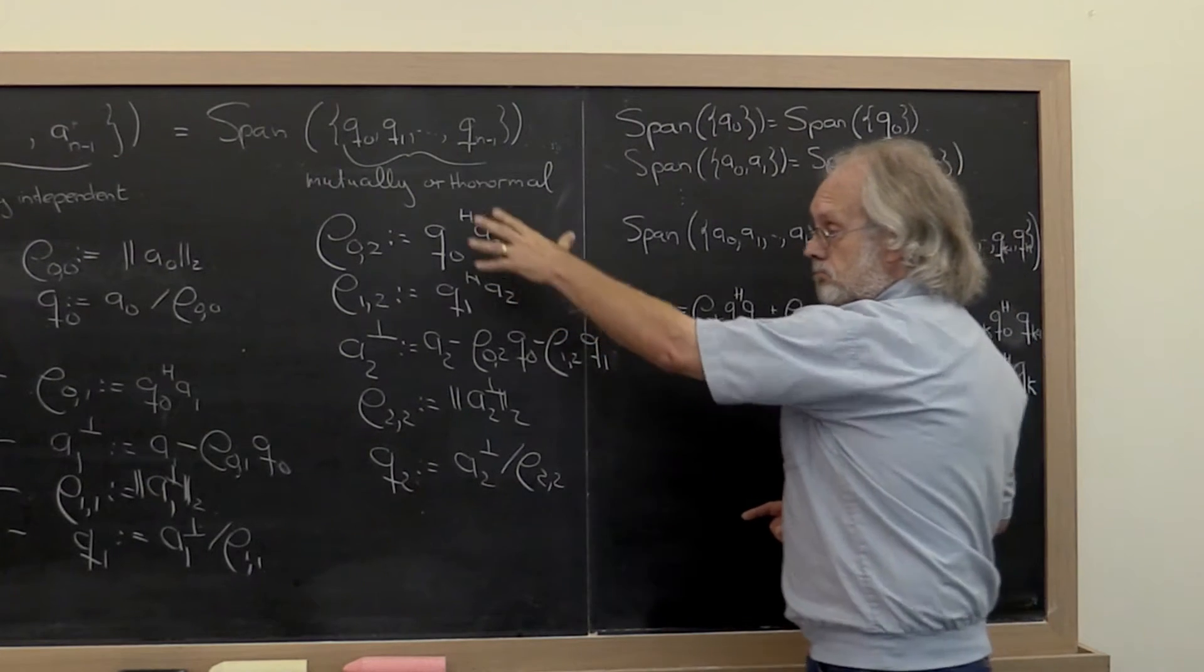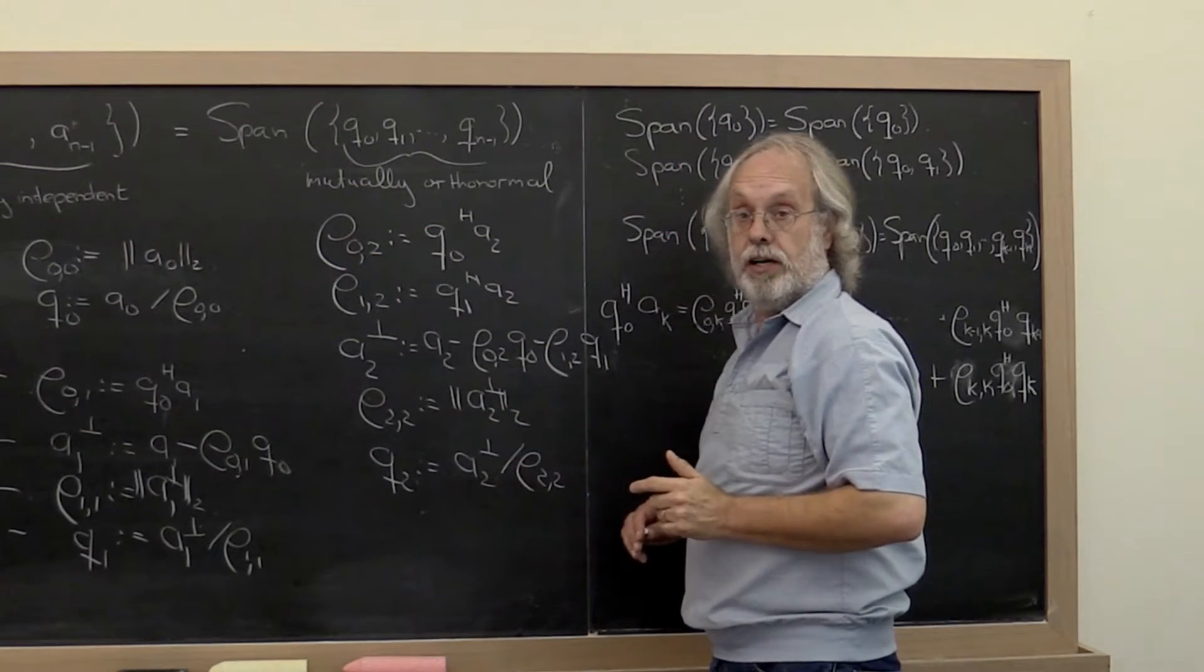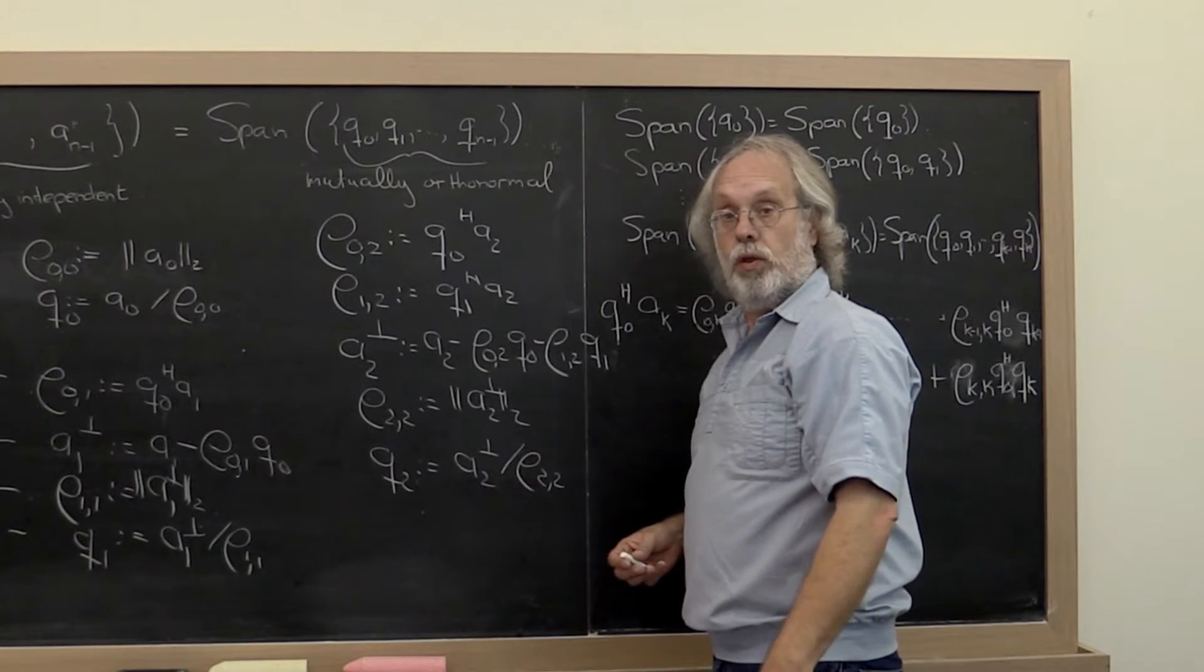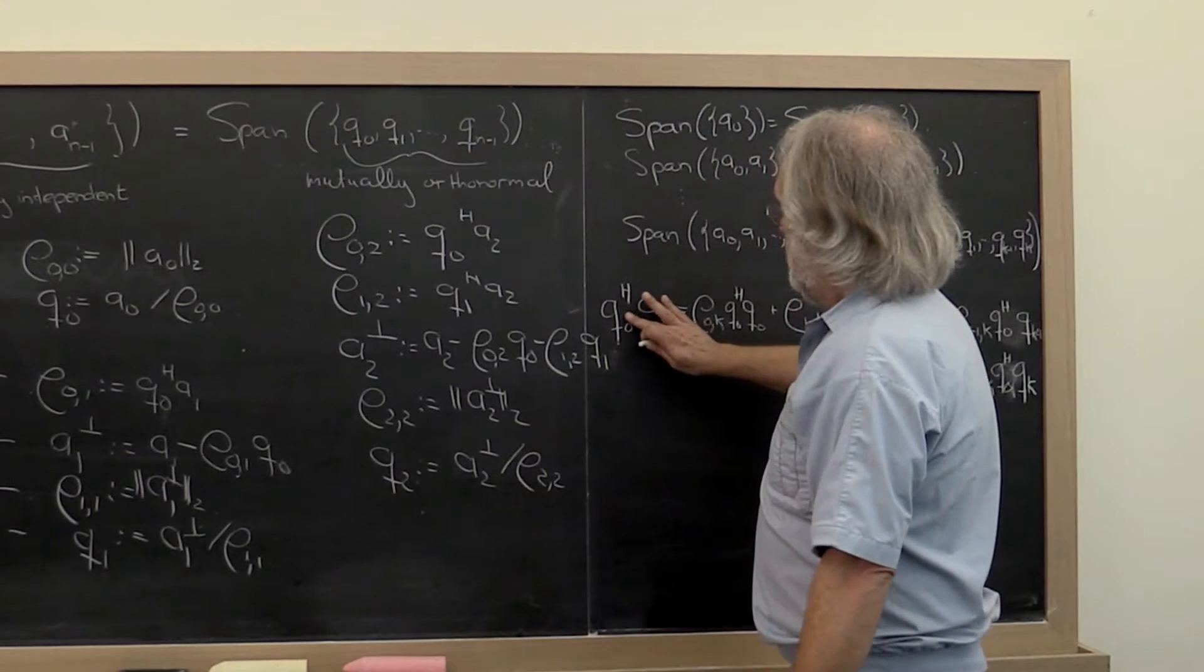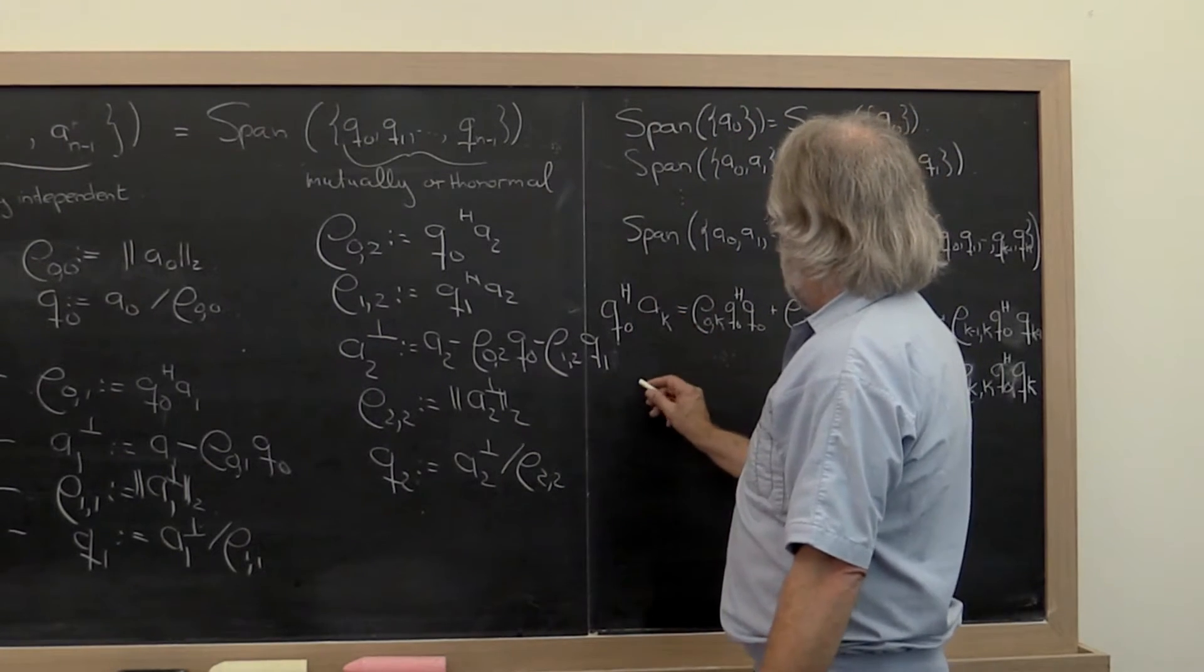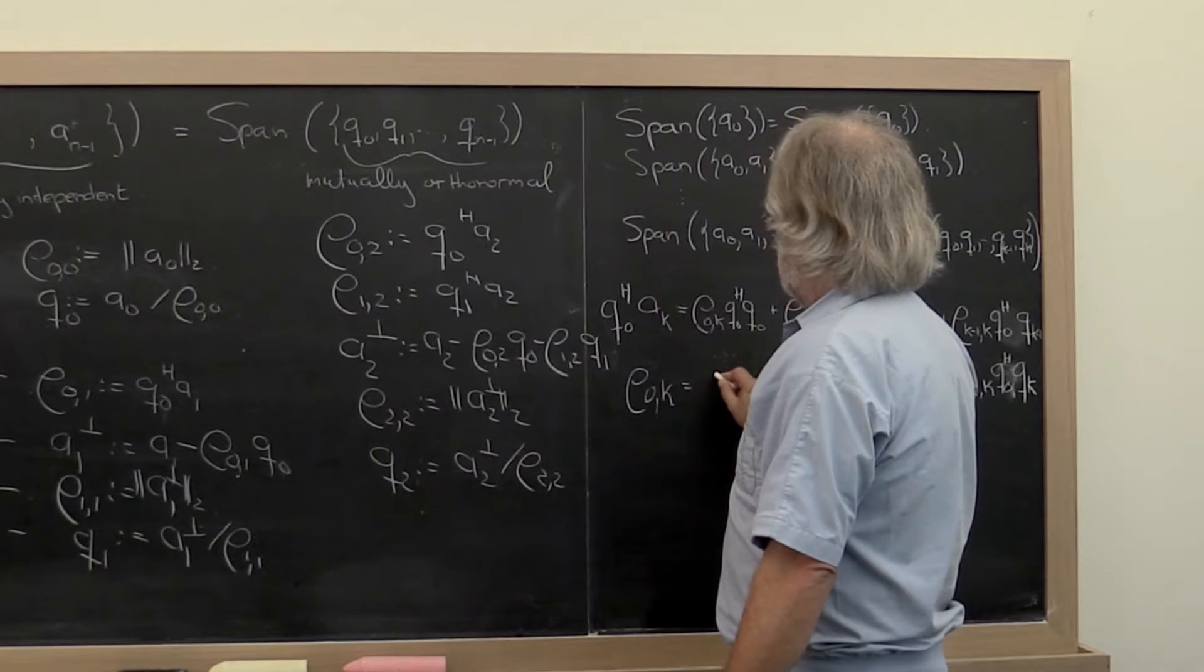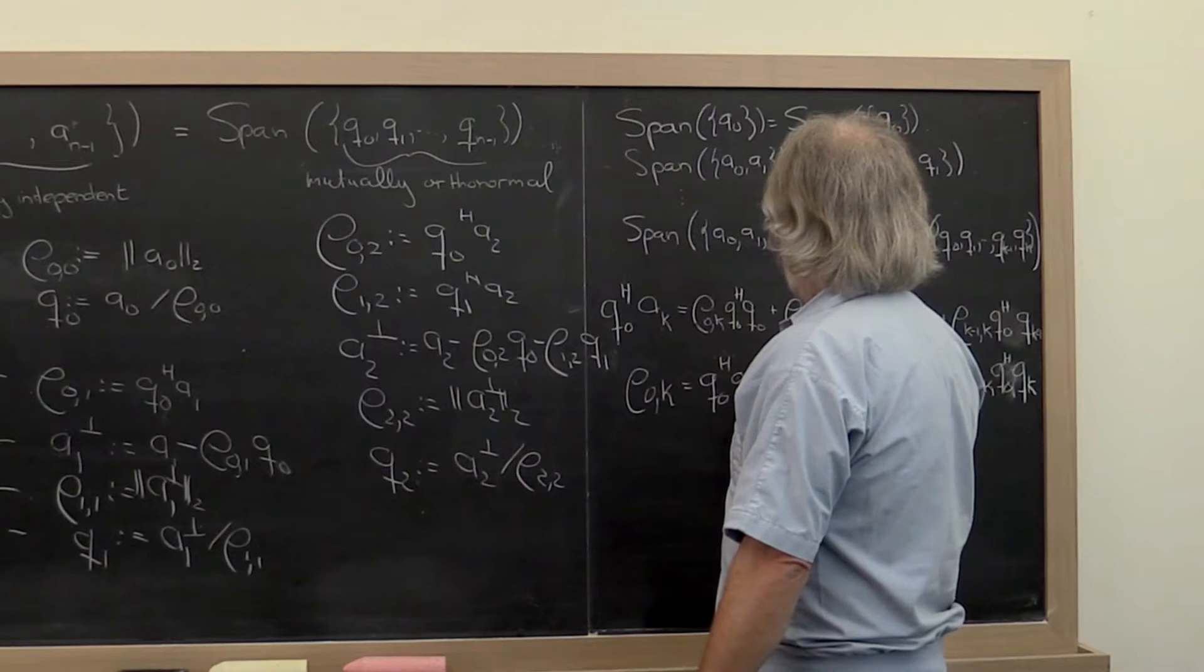Right? That follows exactly the Gram-Schmidt process that we outlined right here if we have carried it through to the step where we were working with vector Ak. So what we conclude is that rho 0k is just the dot product of Q0 with Ak.